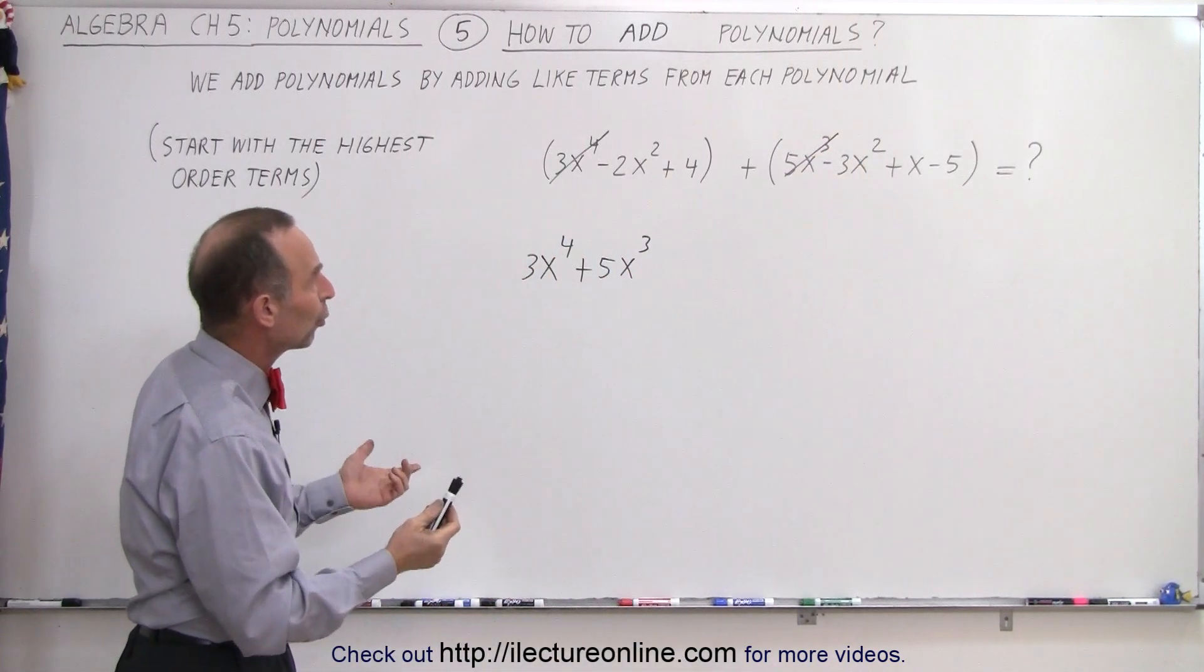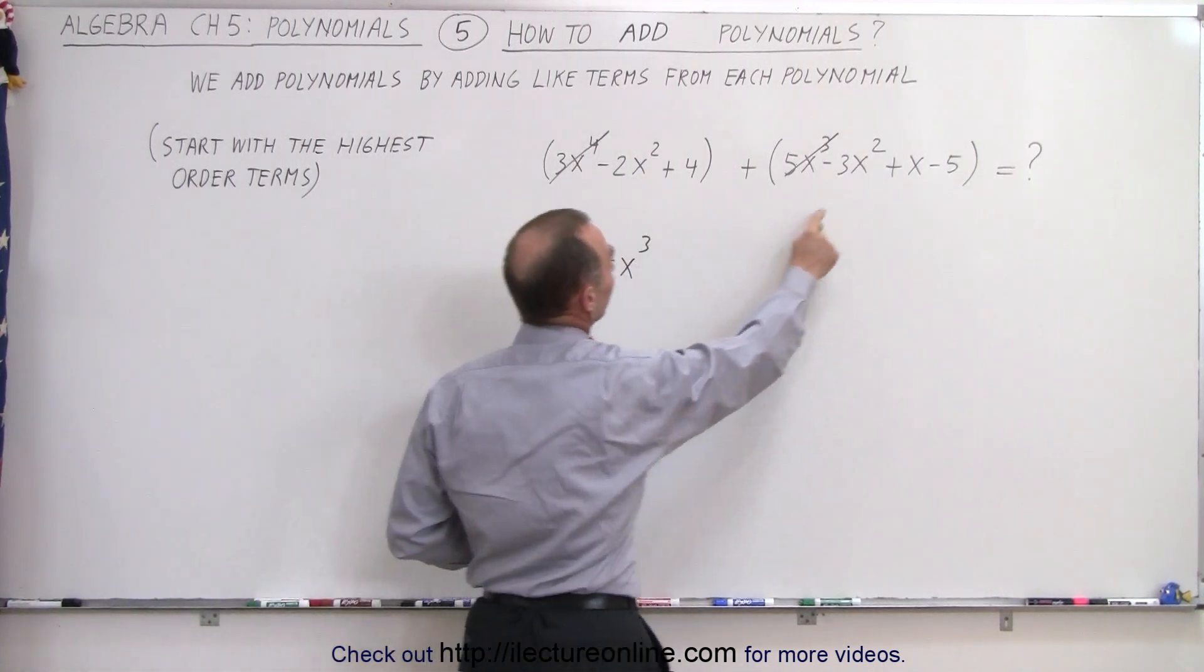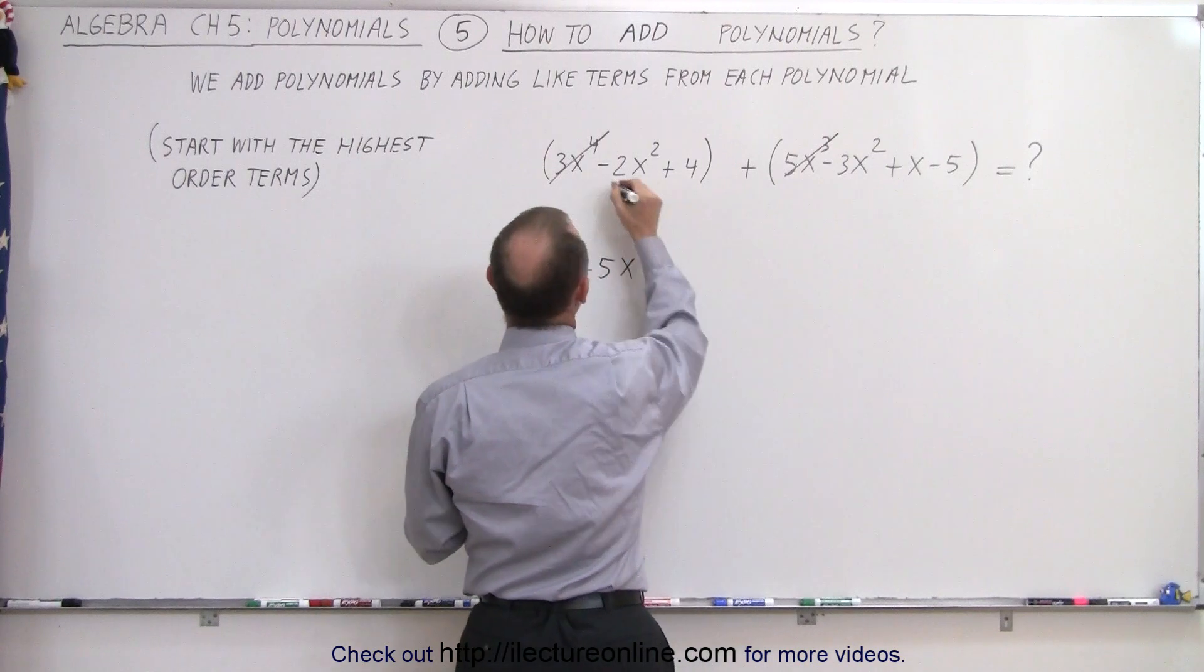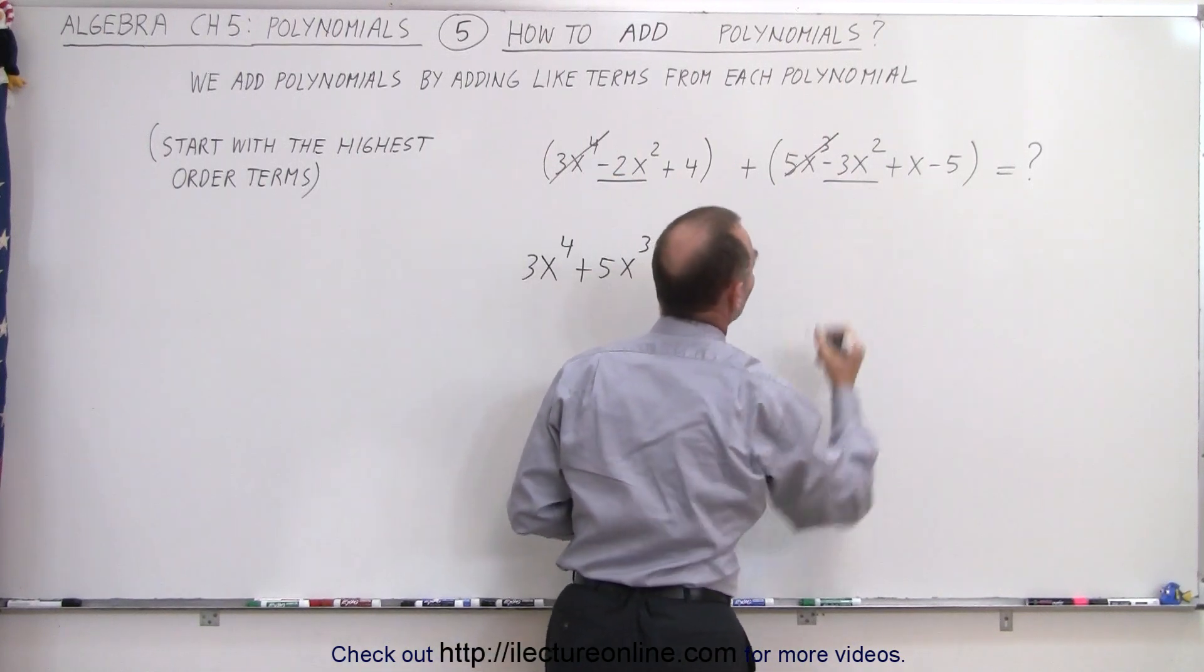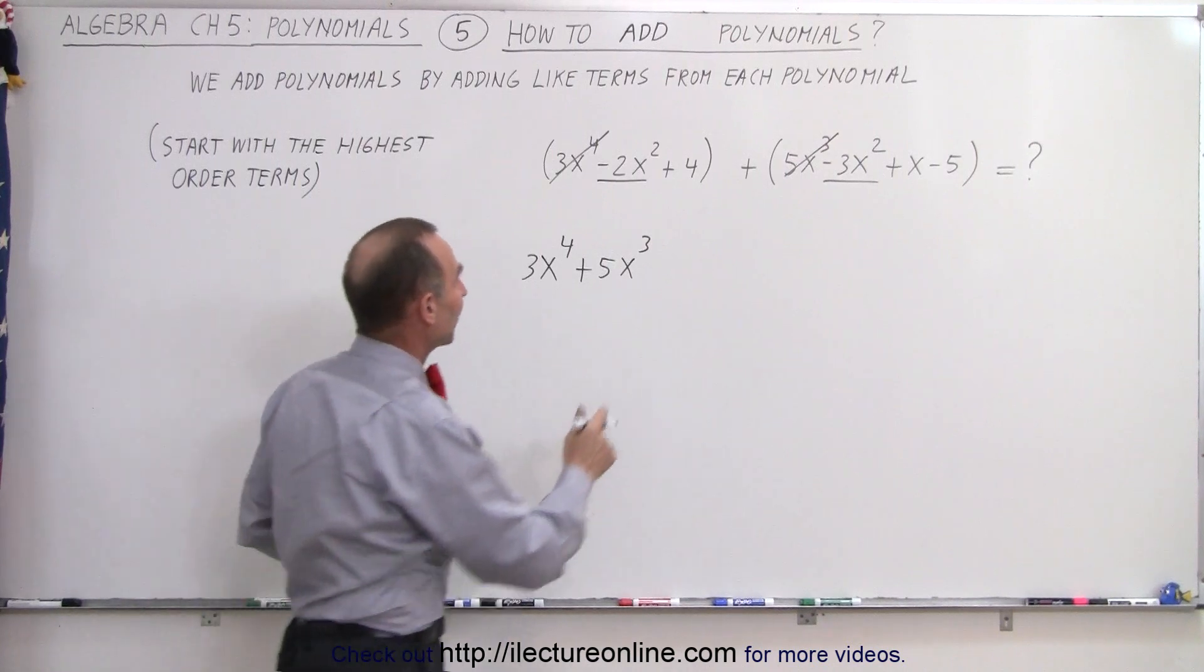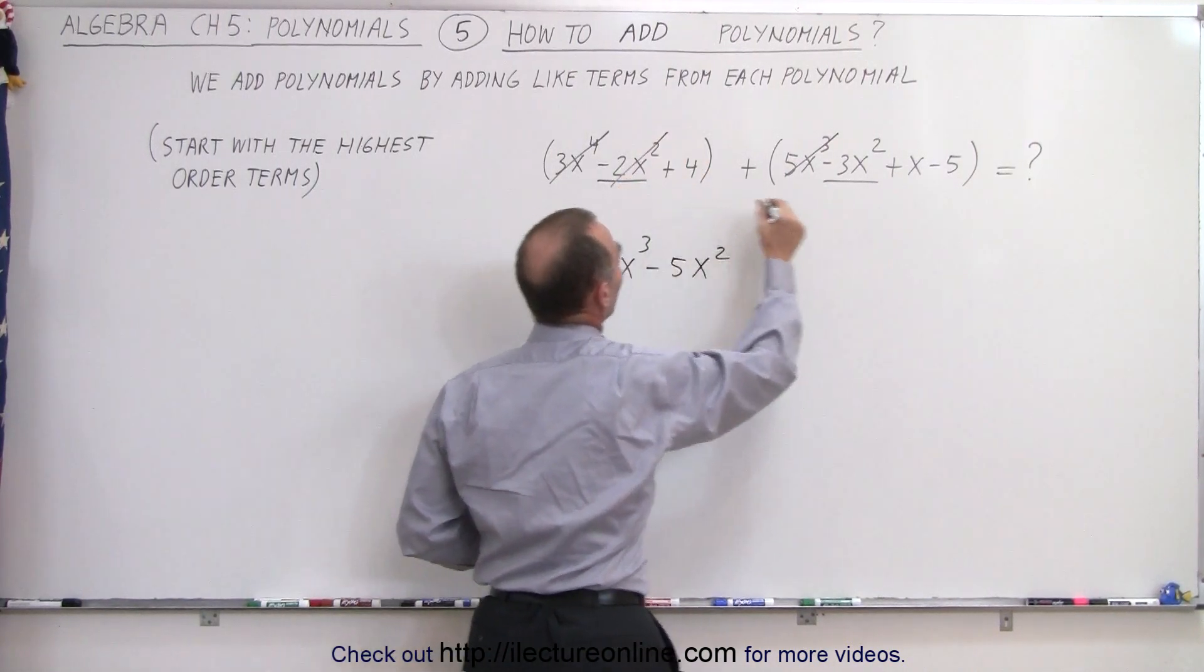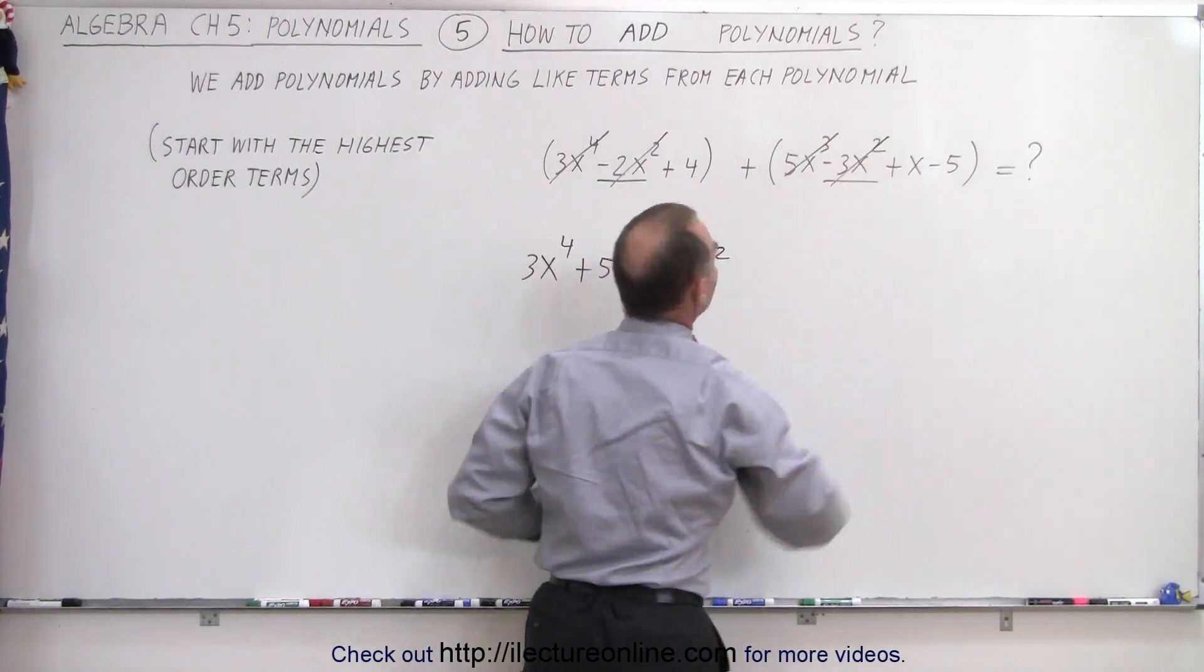Next is the second order term, and now there's two of those terms. There's one over here, and there's one over here. So we have a minus 2x squared and a minus 3x squared. When we add those two together, that adds up to minus 5x squared. And then we can get rid of those by putting a line through it, saying we've already taken care of that.